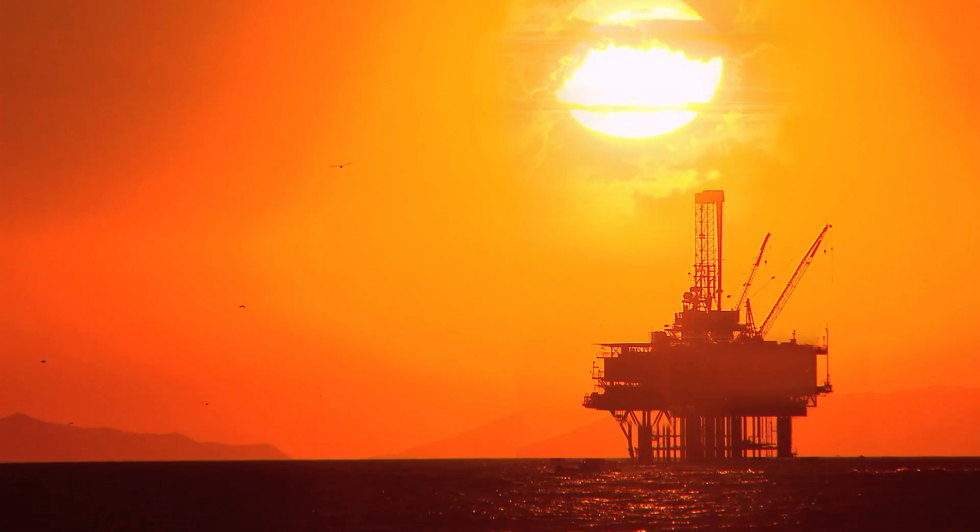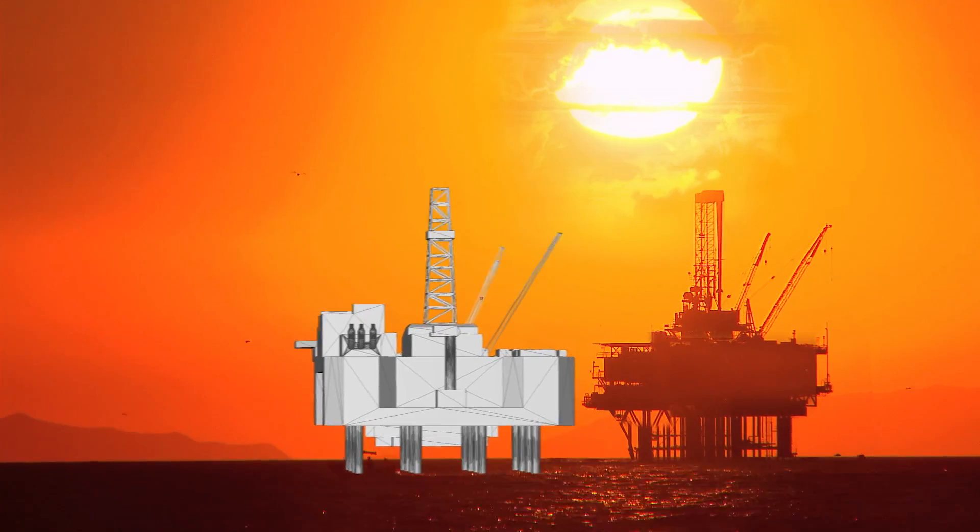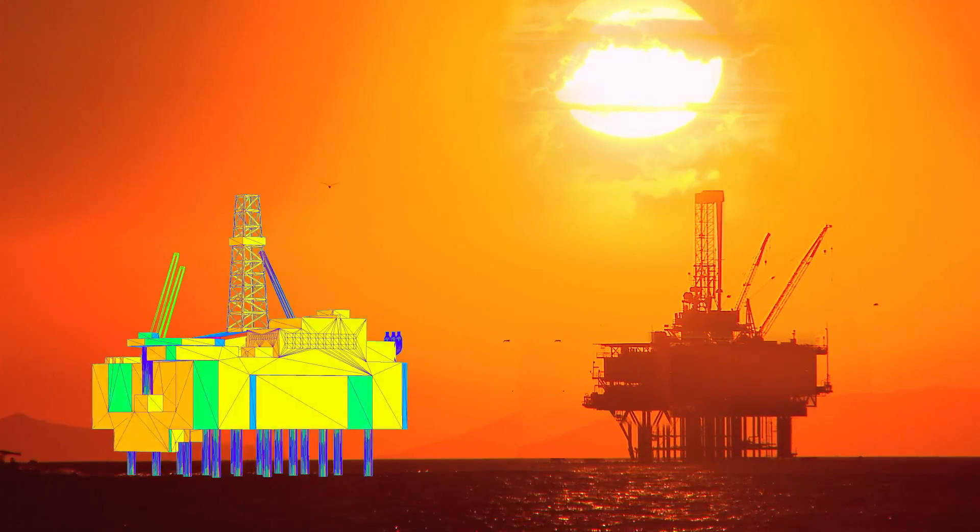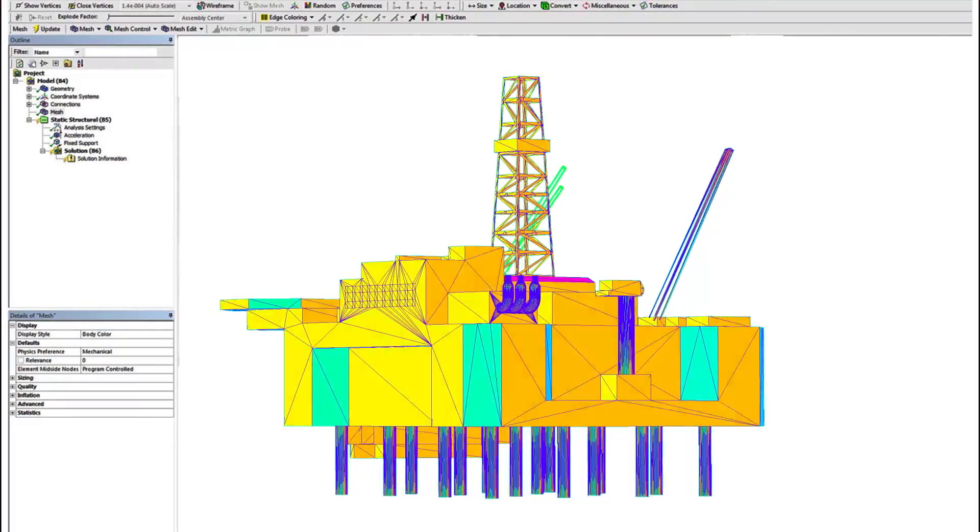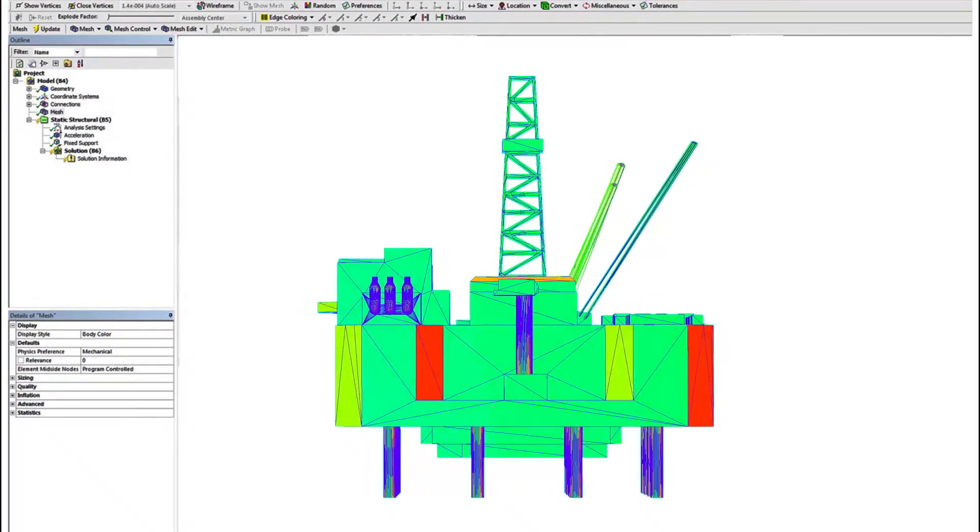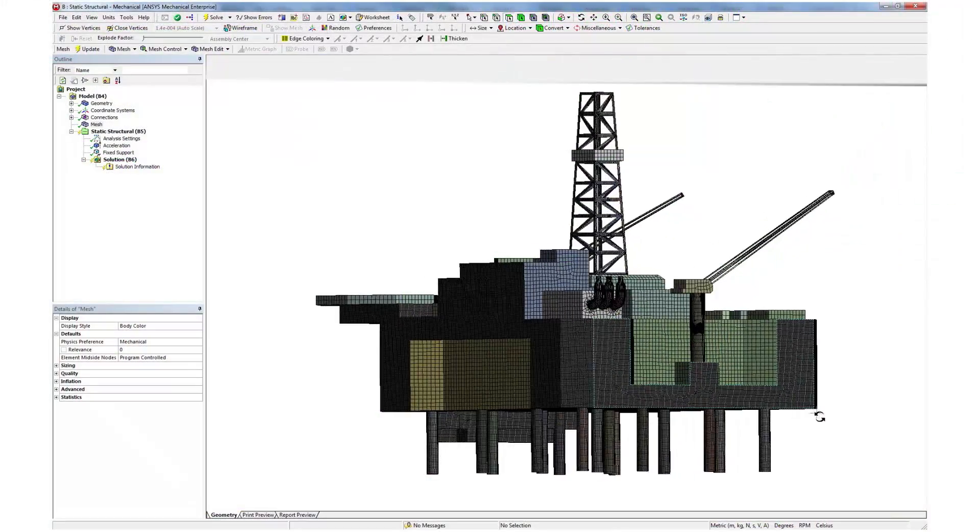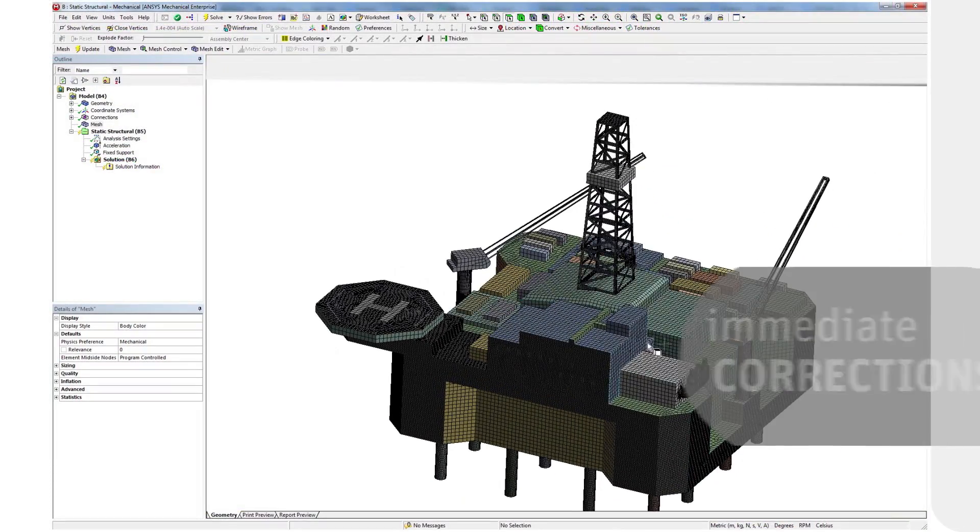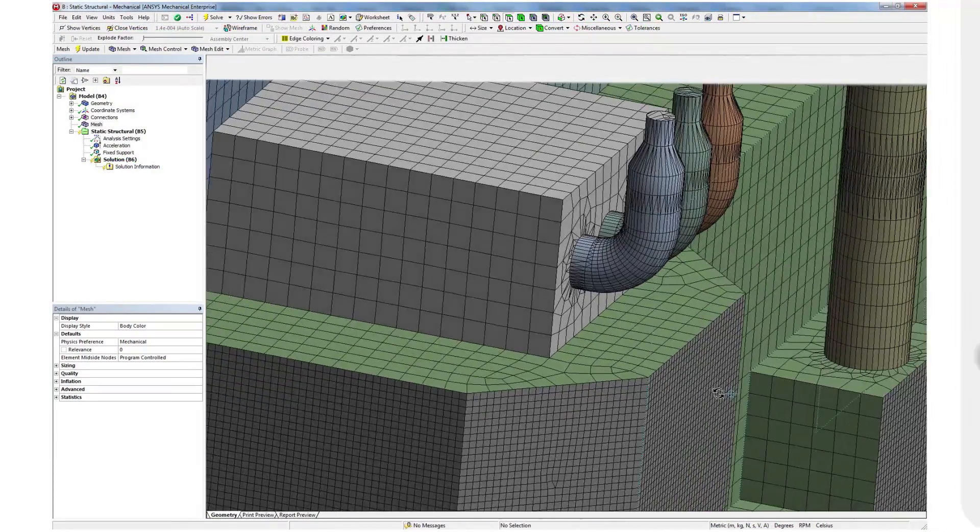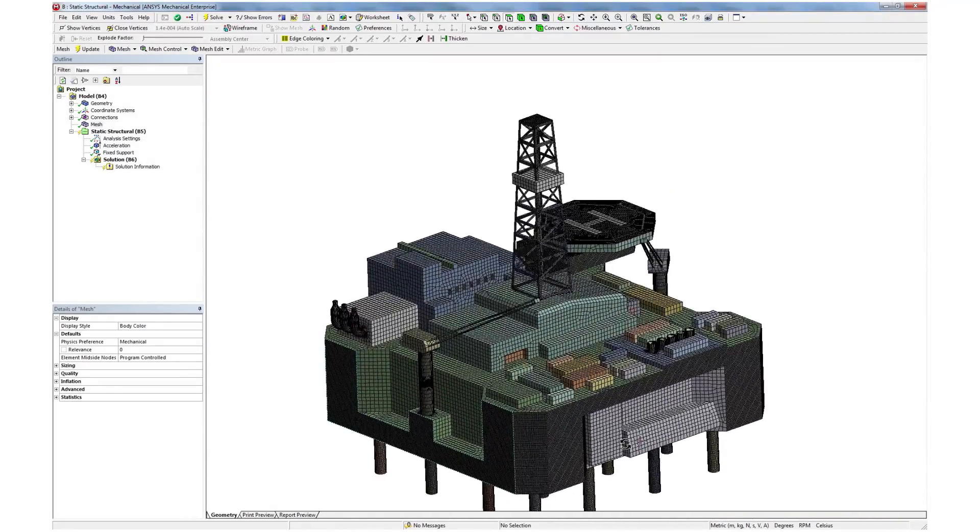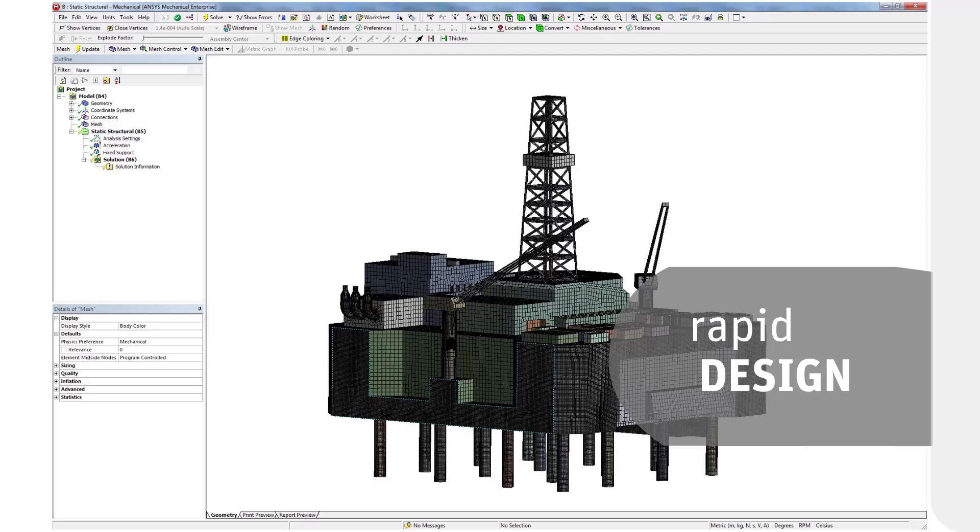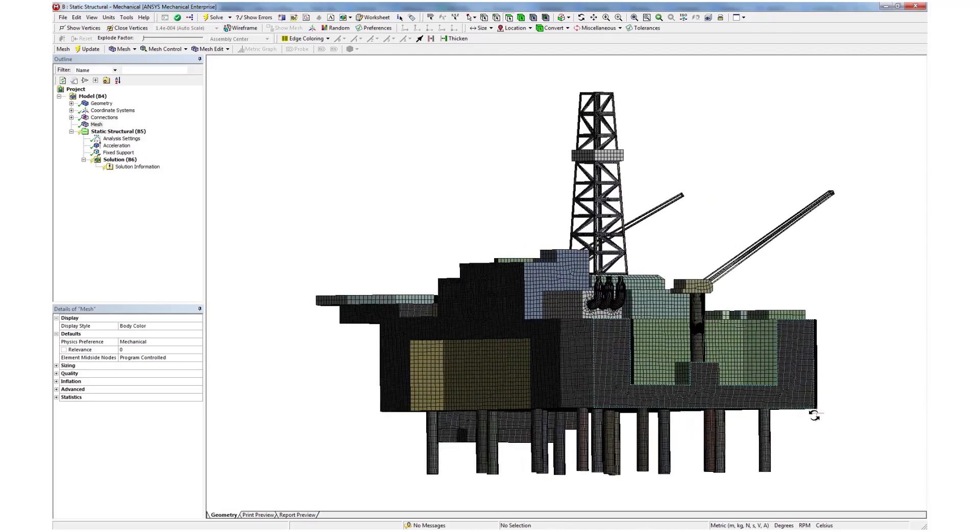Data-driven digital twins created with ANSYS solutions can adapt and respond to different and fast-changing environmental or operating conditions. This one-to-one mapping creates a real-time relationship, allowing engineers to make immediate corrections to their systems, optimizing performance, providing engineering insight that can be applied to rapidly accelerate the design of new products.